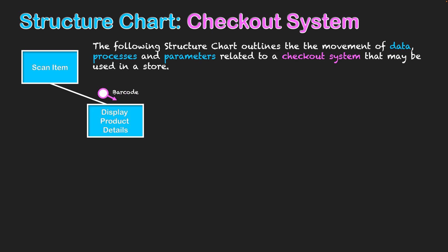That barcode data goes into the system and the system will then display the product's details by checking a database behind the scenes. It displays the product details, and with the checkout system, confirmation of what the product is usually appears on screen. But then the thing taken in the next step is specifically the price.